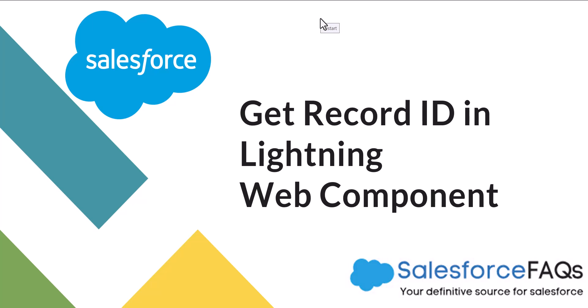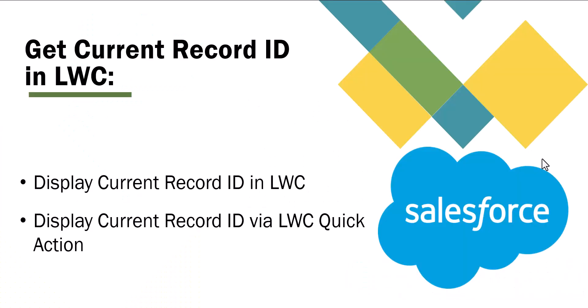Hi everyone and welcome to the channel. Today in this video I will explain how you can get or fetch the current record ID of an object record in Salesforce Lightning Web Component. We are going to discuss two ways through which we can fetch and display the current record ID in the Lightning Web Component.